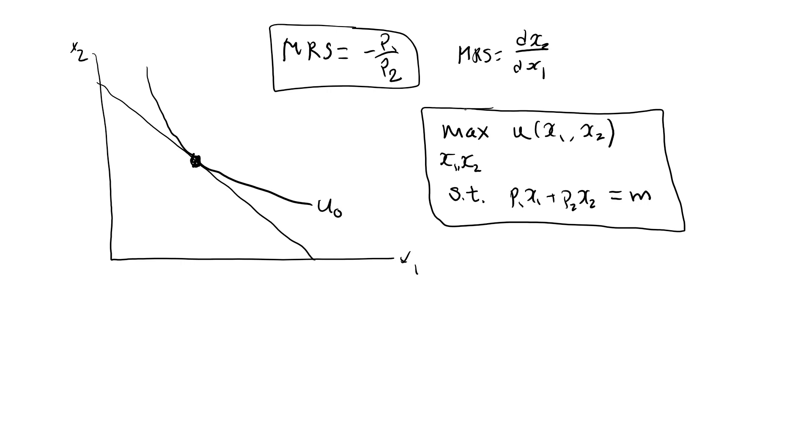It is what's called a constrained optimization problem. We optimize the function of two variables, u, and we have one constraint.